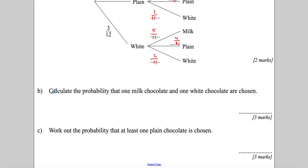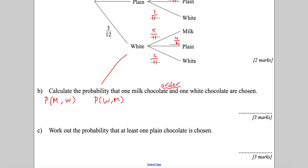Next, part b asks for the probability of picking one milk and one white chocolate — that's three marks. Since the order isn't specified, we could have milk then white, or white then milk. When you have multiple options like this, you use the OR rule and add the probabilities of each possible ordering.